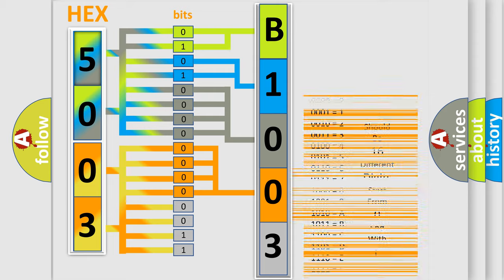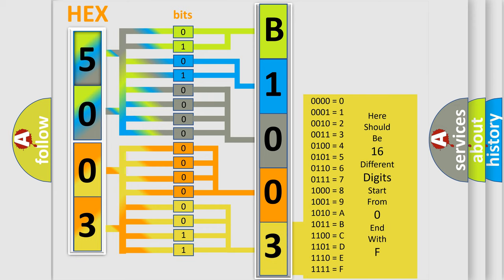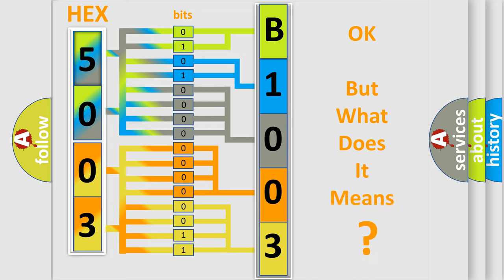A single byte conceals 256 possible combinations. We now know in what way the diagnostic tool translates the received information into a more comprehensible format. The number itself does not make sense to us if we cannot assign information about what it actually expresses.